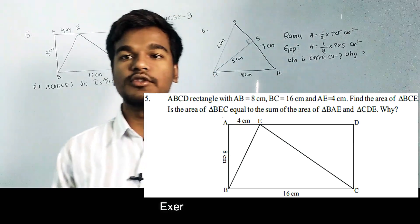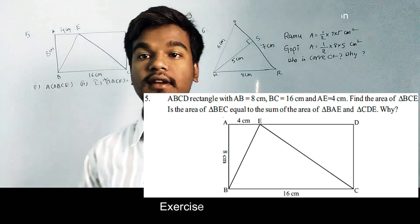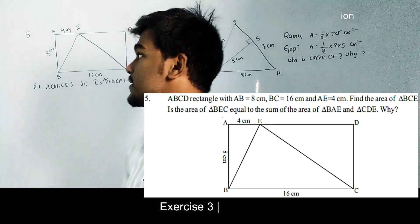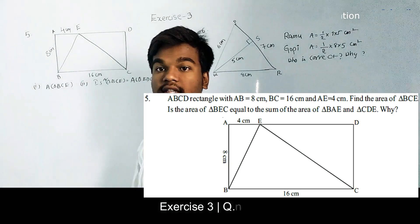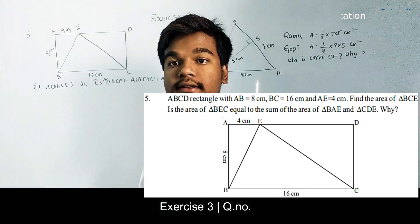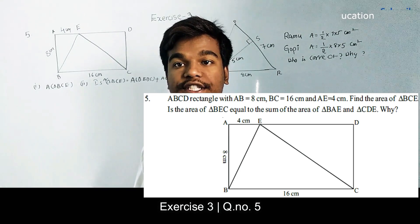Hello viewers, in this module we are going to discuss solutions for the 5th and 6th equations. Here the 5th equation gives us one rectangle where AB is equal to 8 cm and AE will be 4 cm.